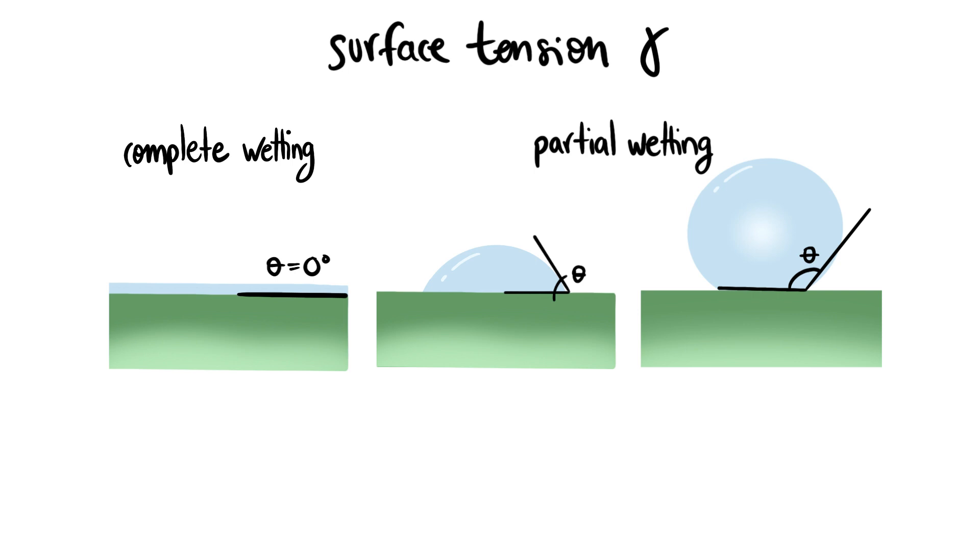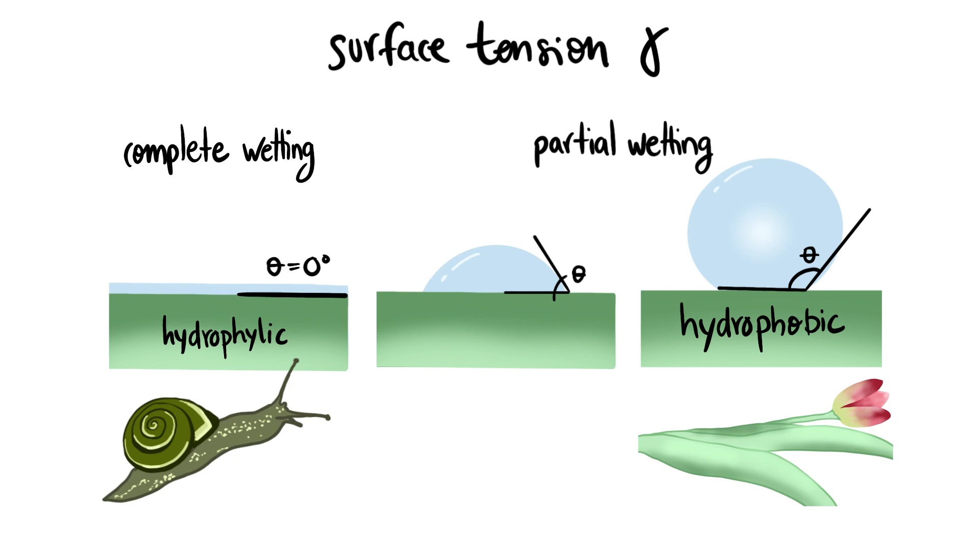In general, we talk about materials being hydrophilic when water wets them with a small contact angle, like the snail's skin, or hydrophobic when water partially wets them with a high contact angle, like the leaf.